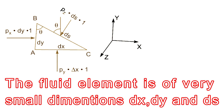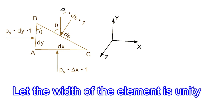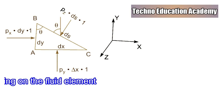To prove Px equal to Py equal to Pz, we are considering a fluid element of very small dimensions dx, dy, and ds. Consider an arbitrary fluid element of wedge shape or triangular shape in a fluid mass at rest, as shown in the figure. The width of the element perpendicular to the plane of the paper is unity, and Px, Py, and Pz are the pressure intensities acting on faces AB, AC, and BC respectively. The angle of triangle ABC equals theta.